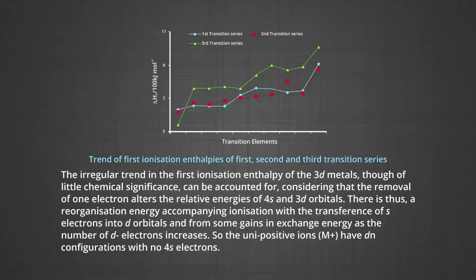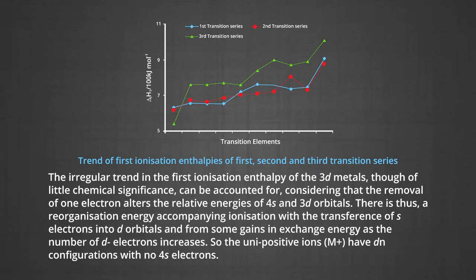There is a reorganization energy accompanying ionization with the transference of S electrons into the D orbitals. The unipositive ions M+ have D^n configuration with no 4S electrons. There is the general expected increasing trend in the ionization enthalpy values with increase in effective nuclear charge.